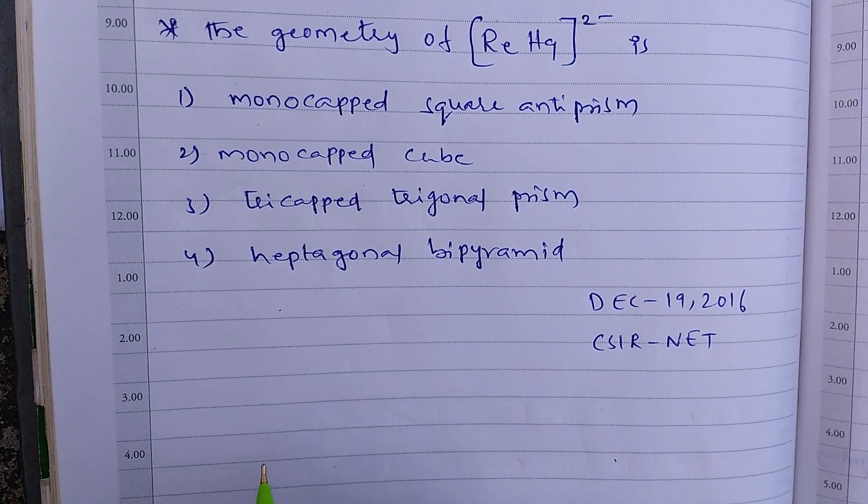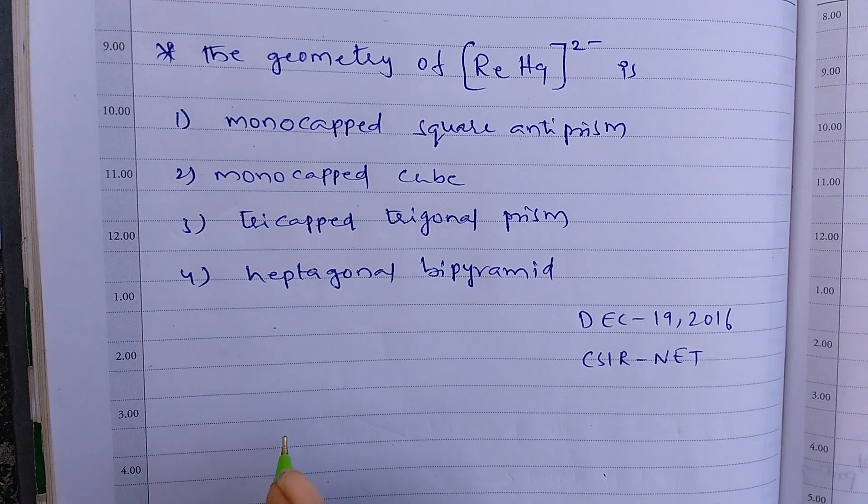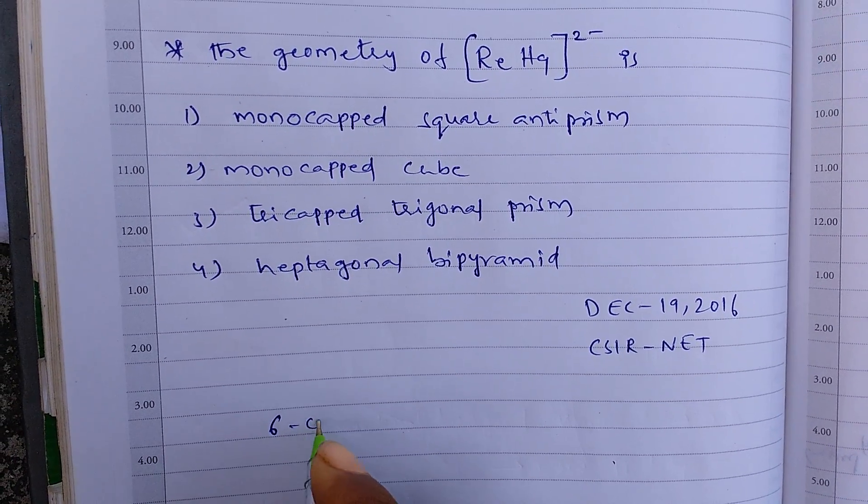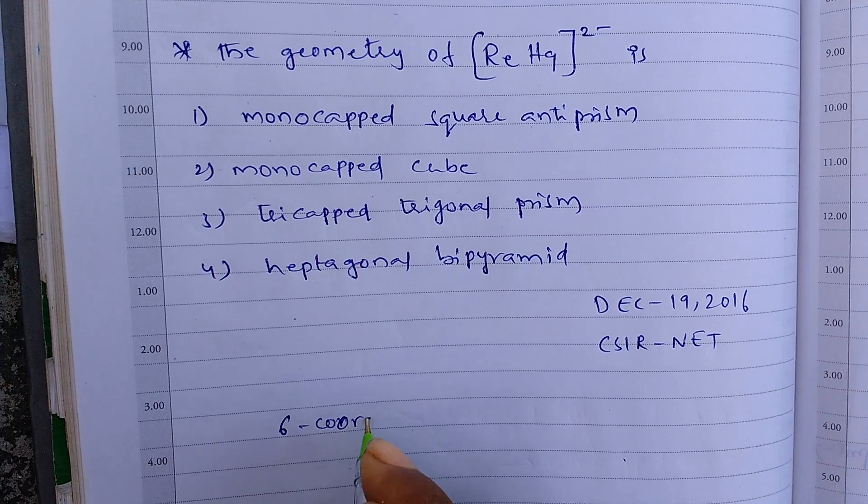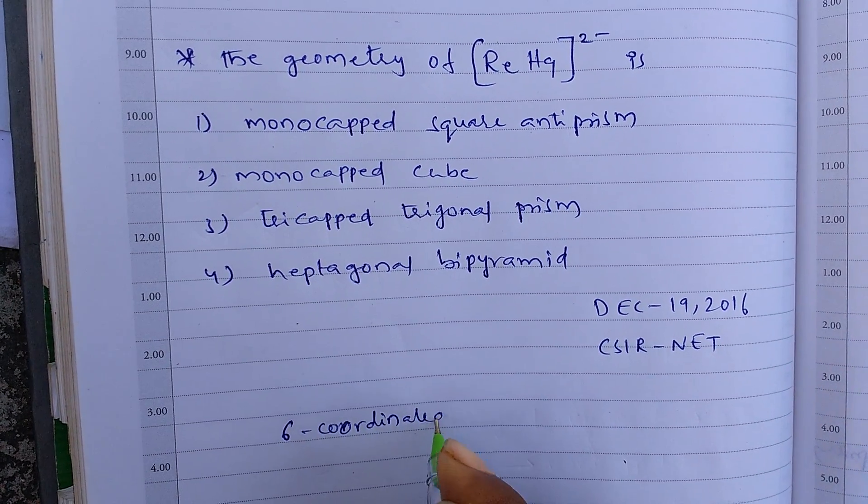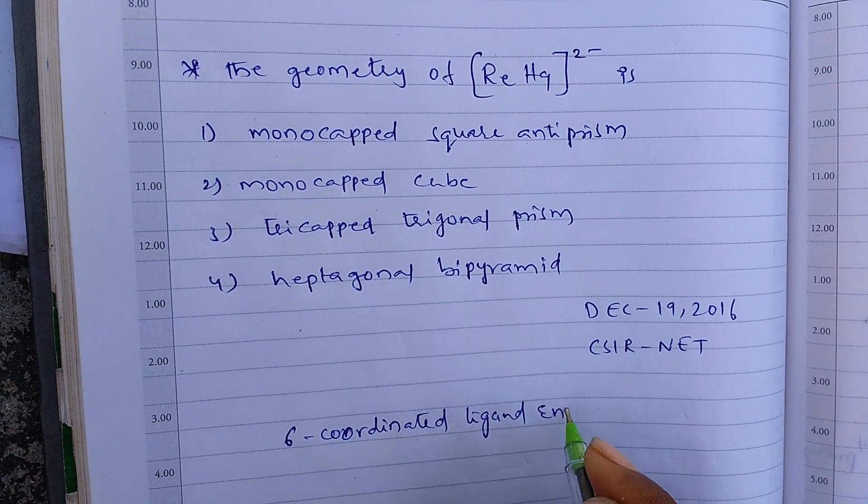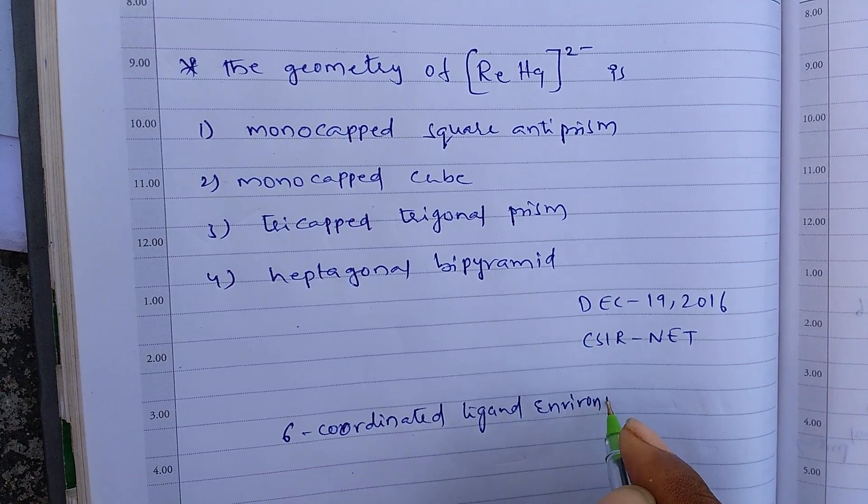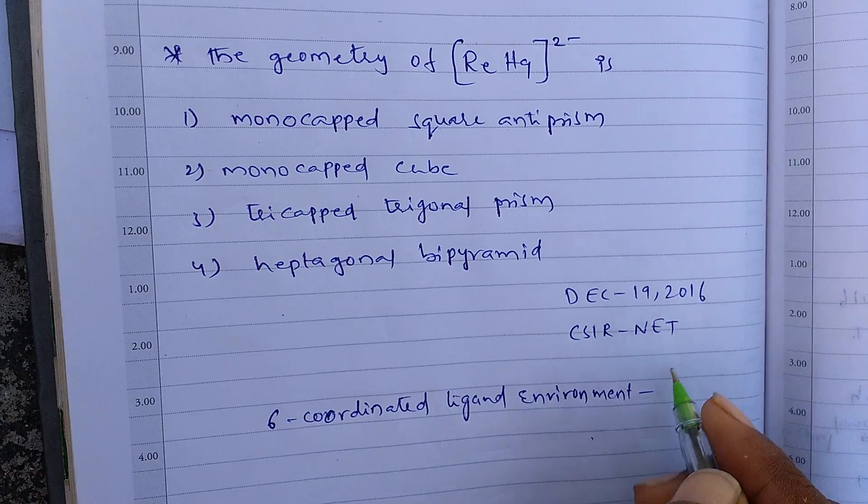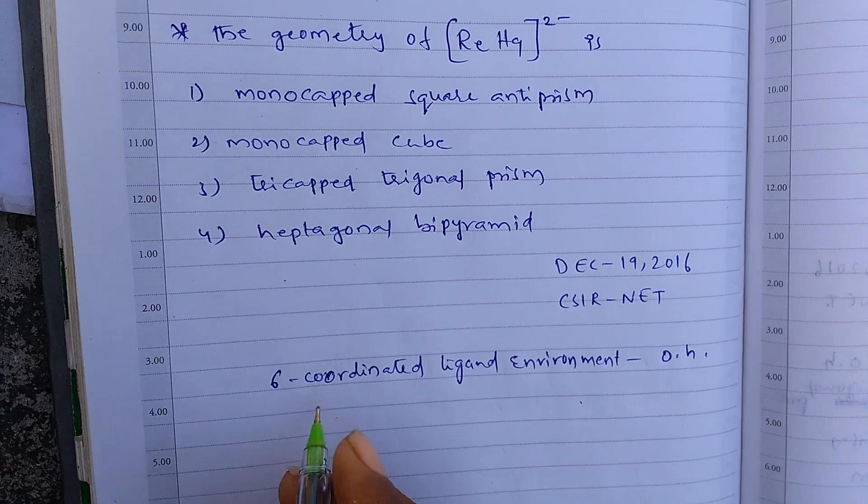If the metal is in 6 coordinated ligand environment, it has octahedral structure.